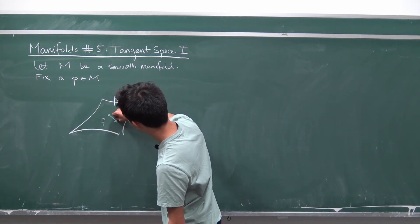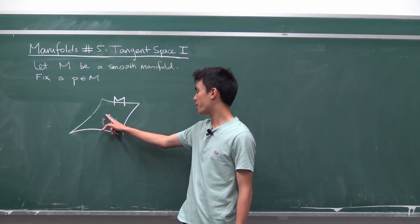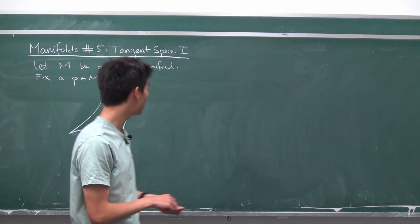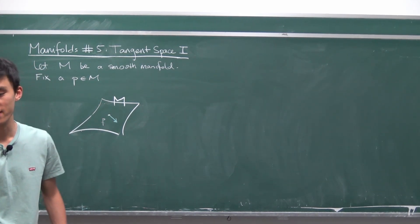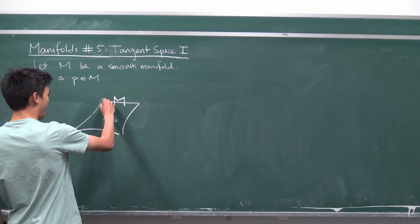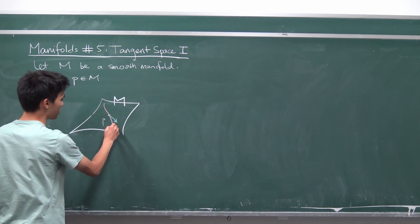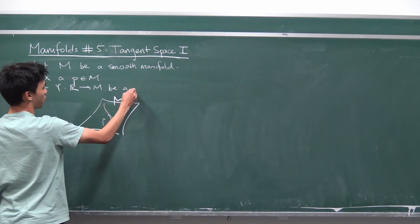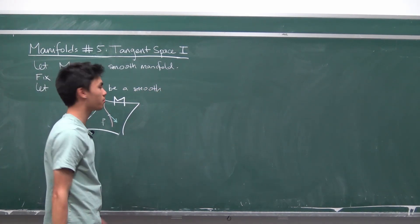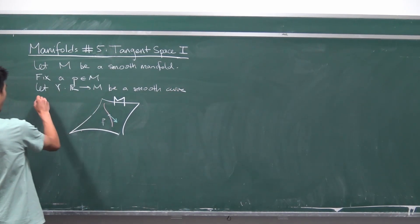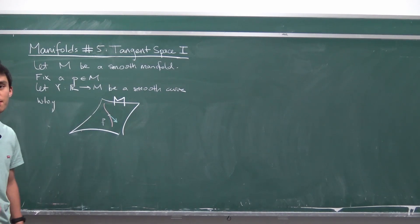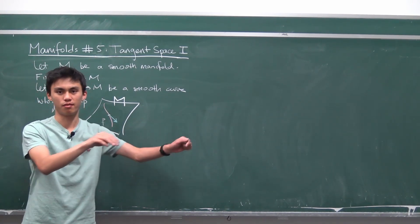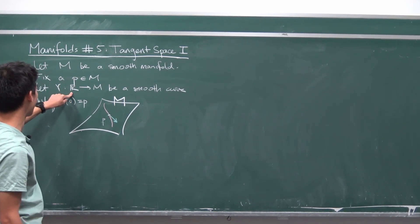I'm going to draw some kind of tangent vector just to give you an idea of what we're trying to do. At our point P, we want a notion of going in a certain direction. One approach: we could imagine we have some curve running through our manifold, and we could differentiate the curve at point P to get a tangent vector. So we let γ: ℝ → M be a smooth curve, and without loss of generality, we assume γ(0) = P.